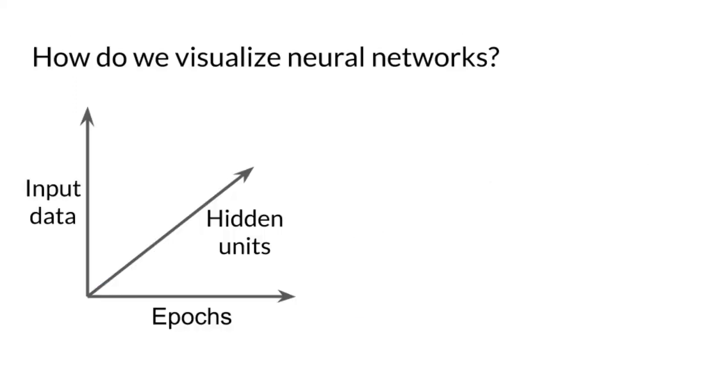When we think about visually inspecting a neural network, we can think about it in terms of three axes: the input data, the hidden units, and the network state over time.